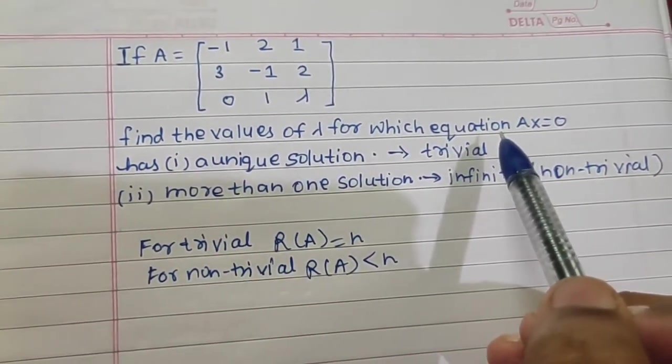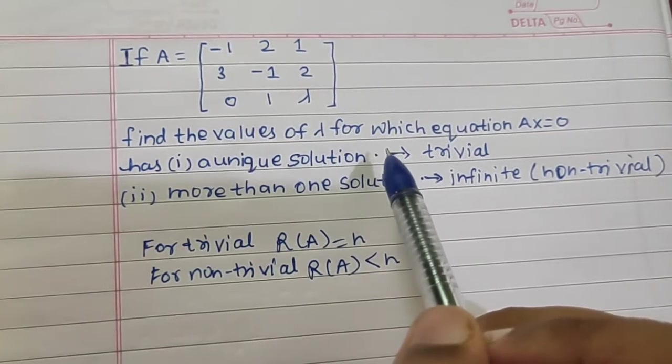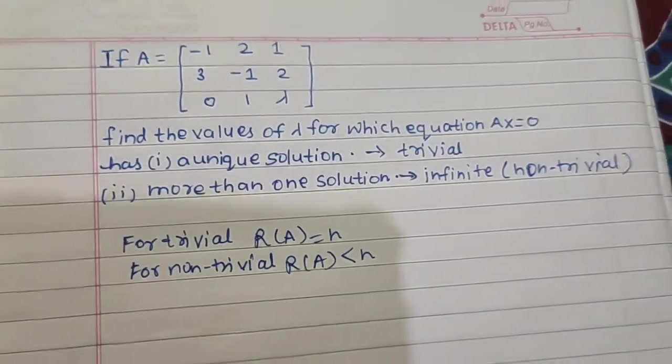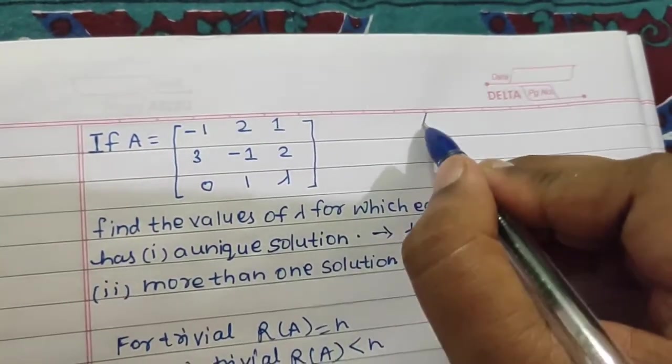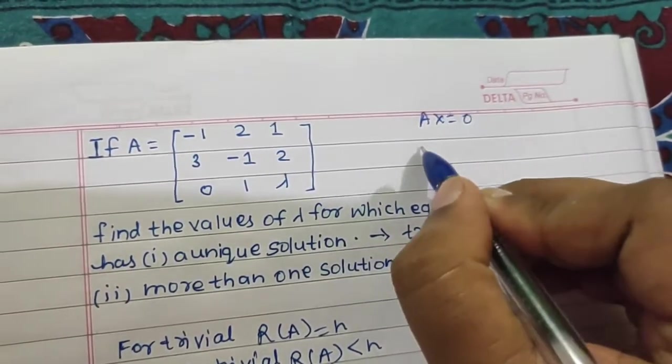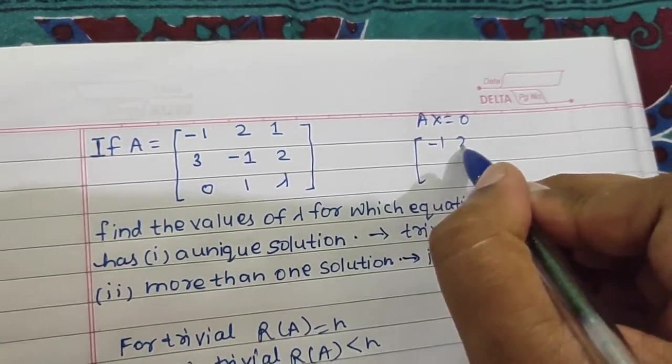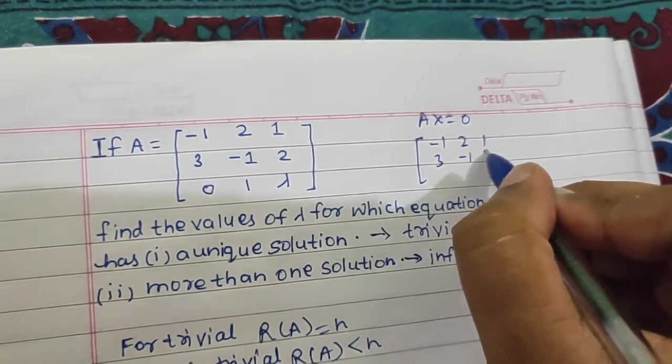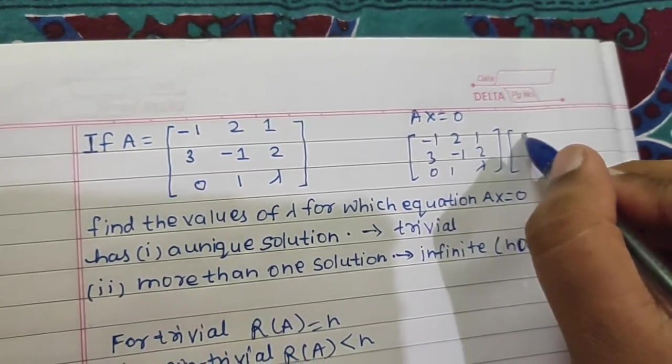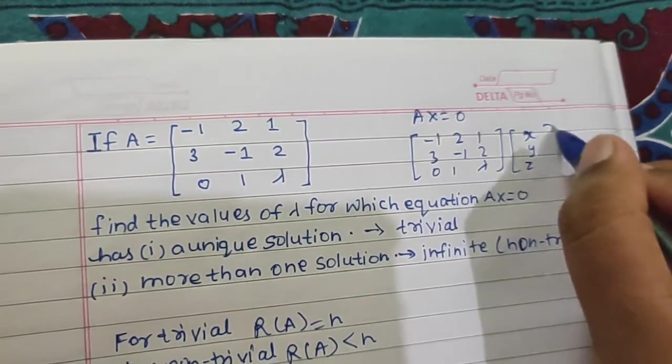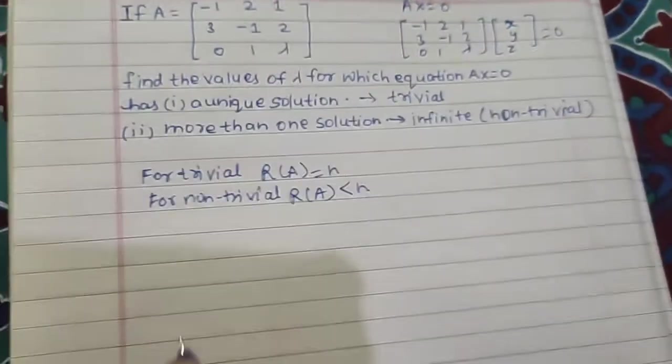This is written Ax equals 0, so we can assume there are three variables here. Ax equals 0 can be written as: minus 1, 2, 1; 3, minus 1, 2; and 0, 1, lambda into x, y, z variables equals 0.